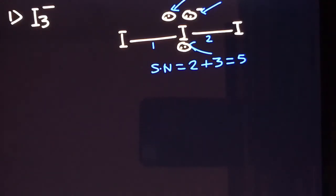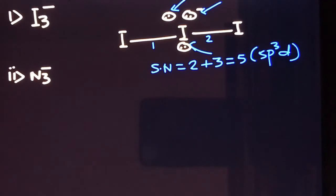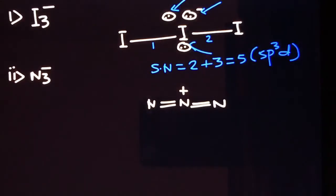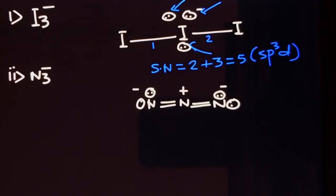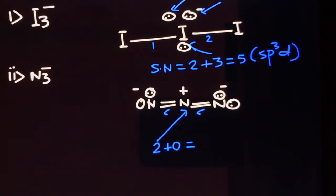Since the steric number is 5, the hybridization will be sp3d. Moving to the next one — this is the azide ion. In the Lewis dot structure of the azide ion, if you find the number of sigma bonds on the central atom, there is one sigma bond and one sigma bond, that is two. The lone pair is zero — there is not a single lone pair on the central atom. So the steric number is 2 and the hybridization will be sp. This will be a linear molecule with a bond angle of 180 degrees.